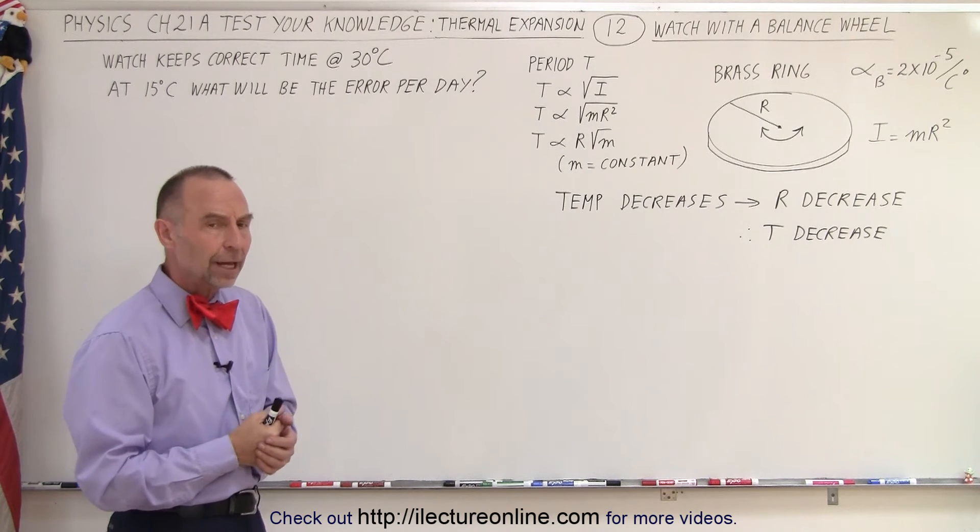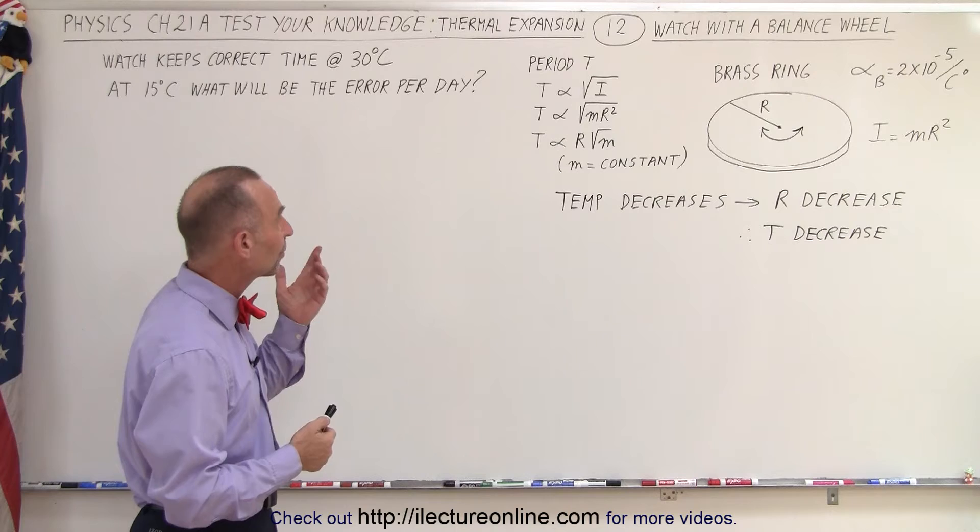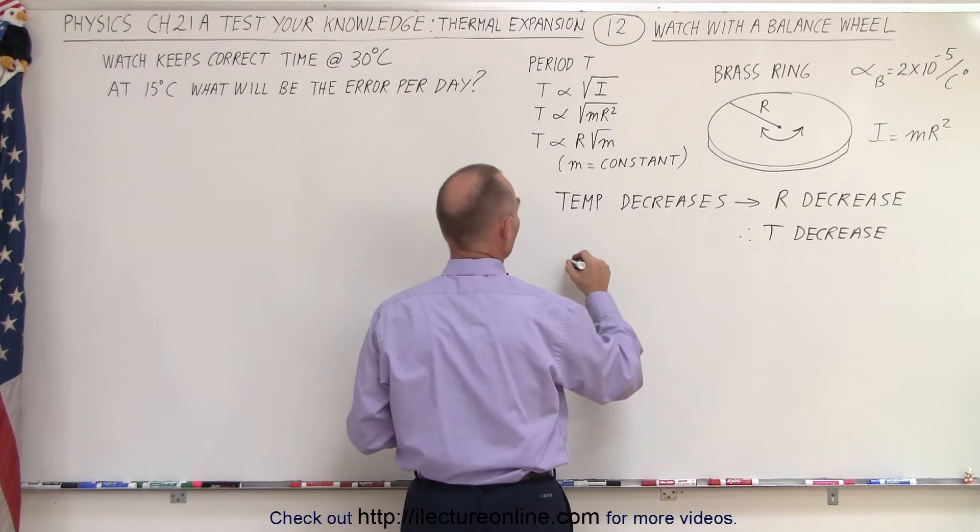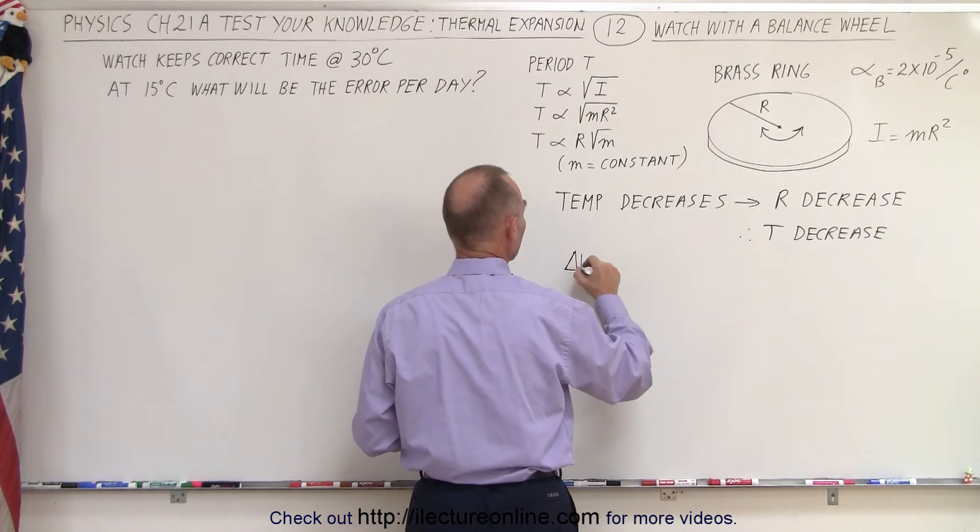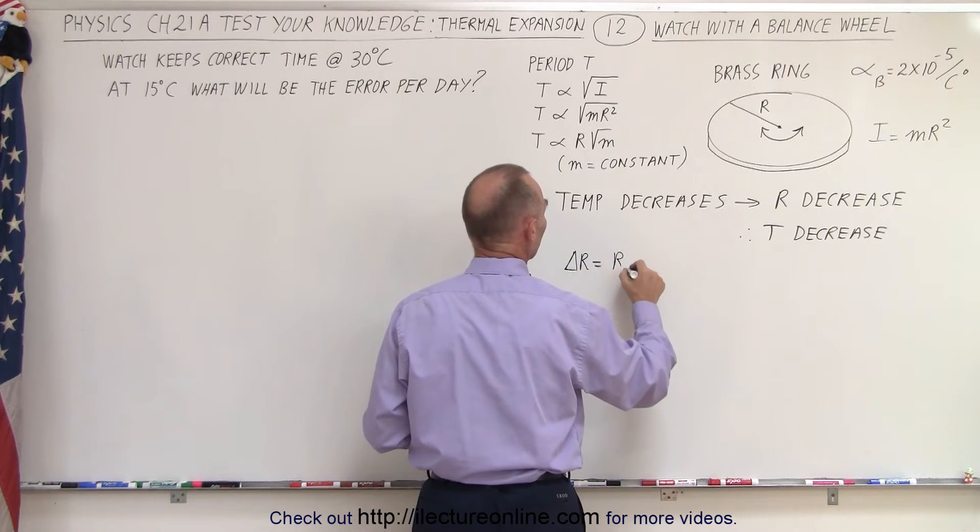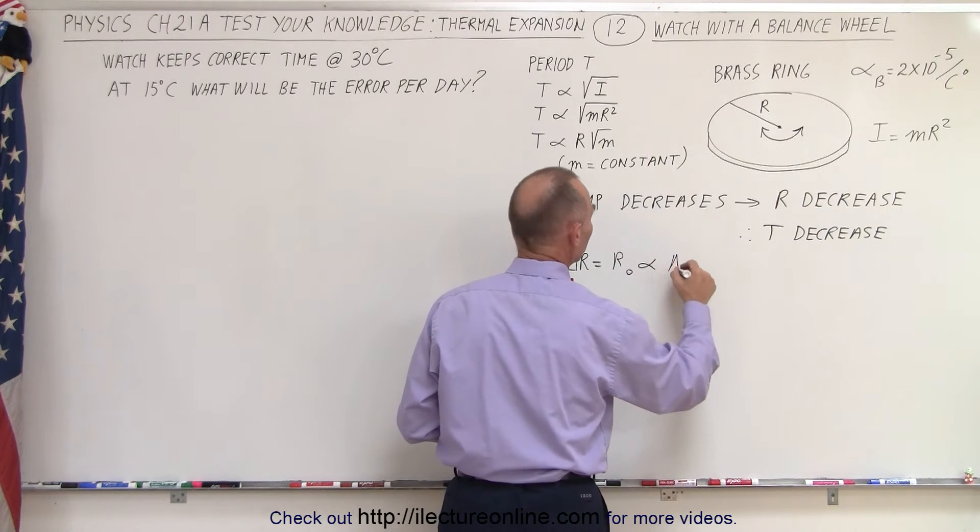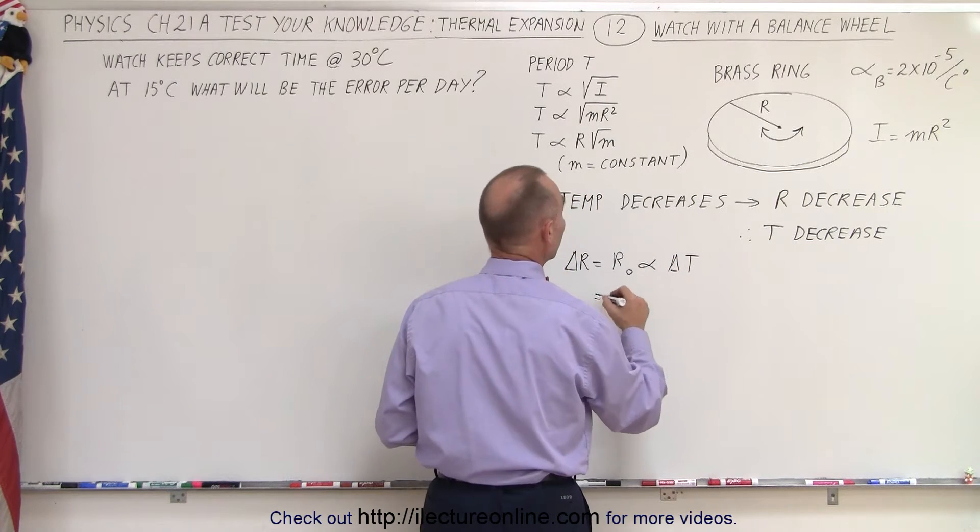How many seconds per day? Well, let's see how much the period will change. And that means we need to find the change in R. So we can say that the change in the radius is equal to the original radius times the coefficient of heat expansion times the change in the temperature.